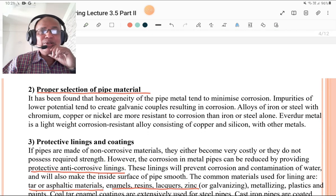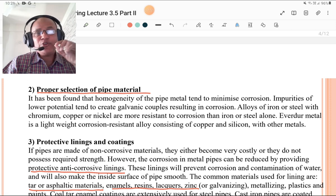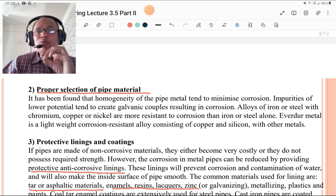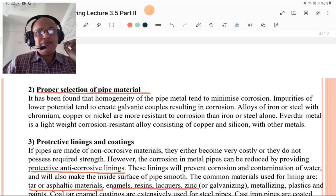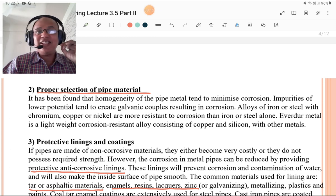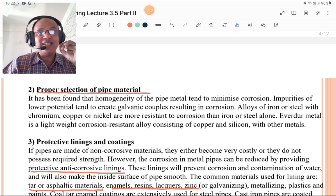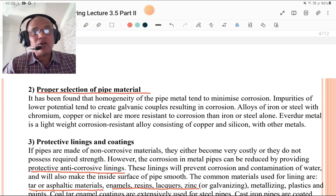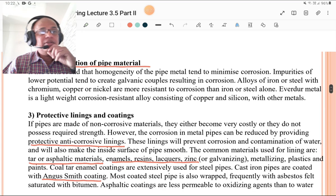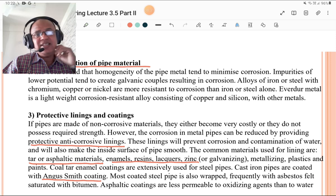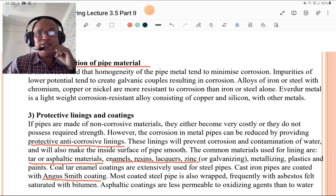Second is proper selection of pipe material. It has been found that homogeneity of pipe metal tends to minimize corrosion. You know what is homogeneous and what is isotropic. Having same properties is homogeneous and having same properties in all directions is isotropic. Impurities of lower potential tend to create galvanic couples resulting in corrosion. Alloys of iron or steel with chromium, copper, and nickel are more resistant to corrosion than iron and steel alone. So iron is coated with chromium, copper, or nickel. Avaldure metal is a lightweight corrosion resistant alloy consisting of copper and silicon with other metals.